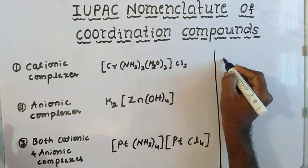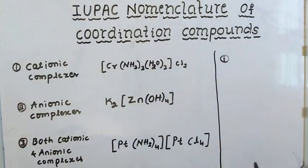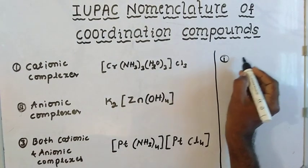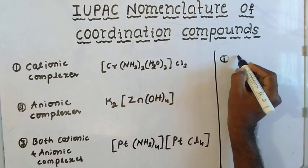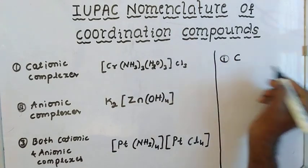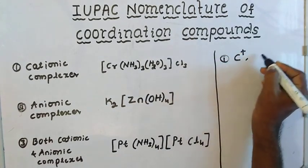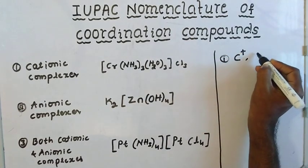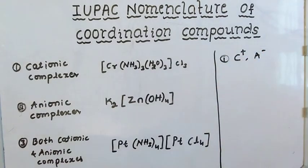First rule: the cation should be named first, then the anion.